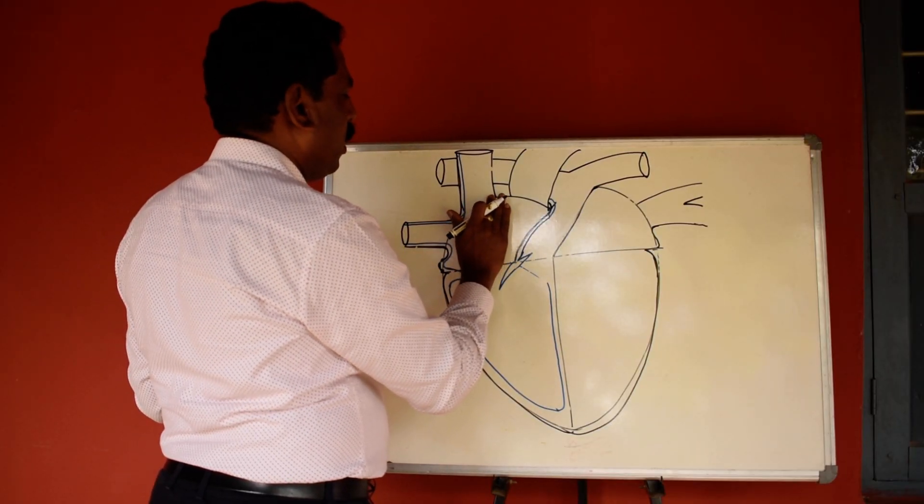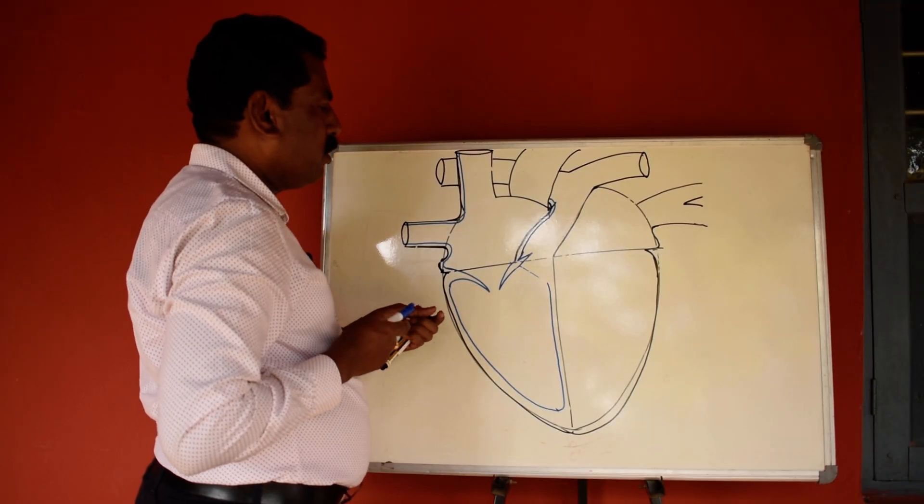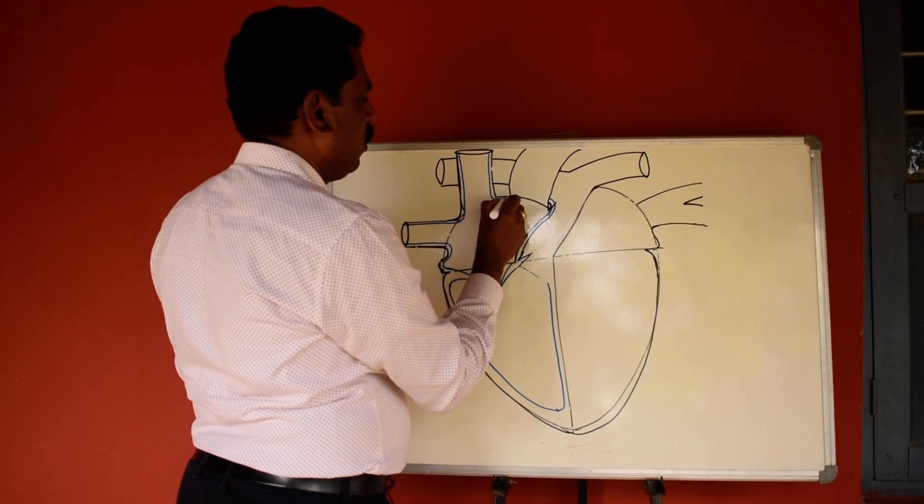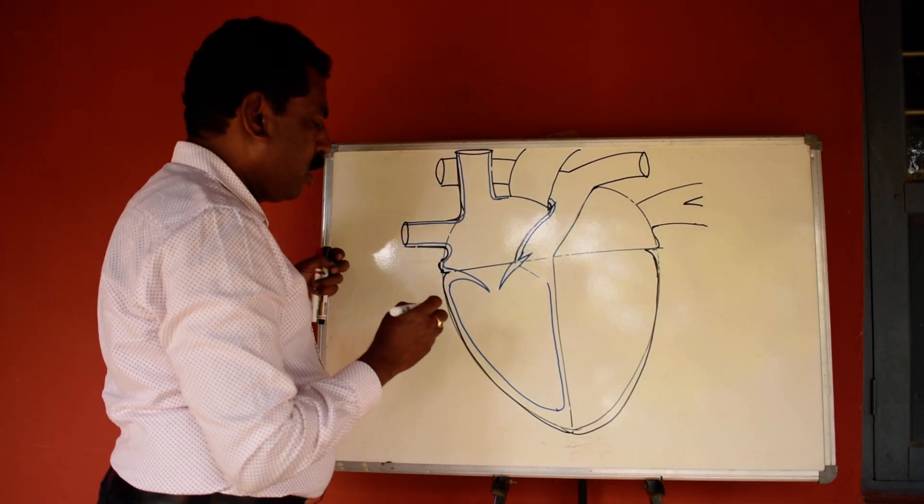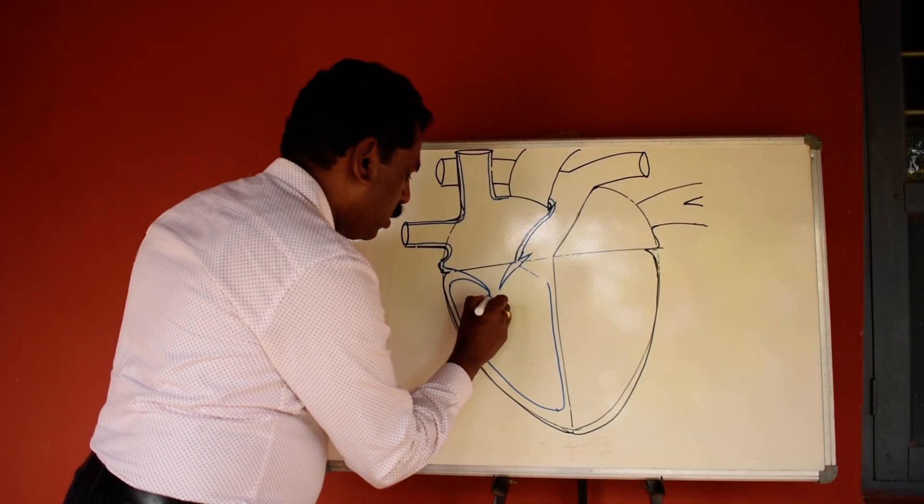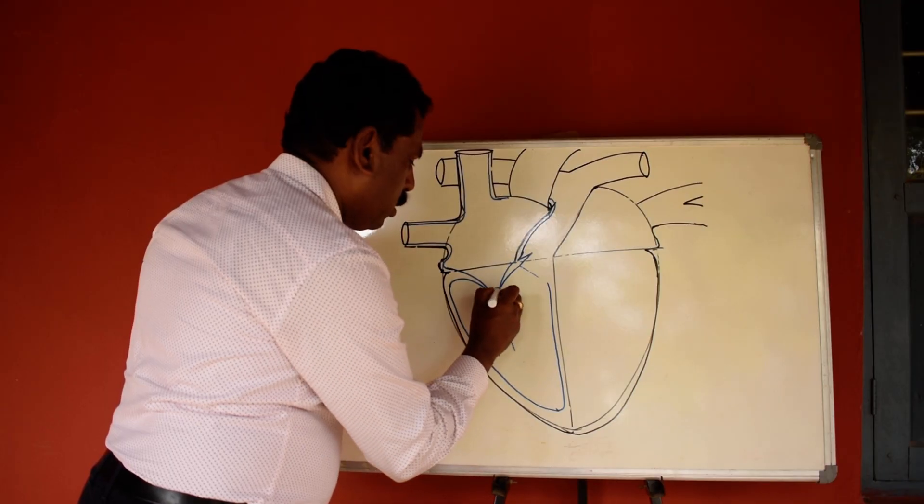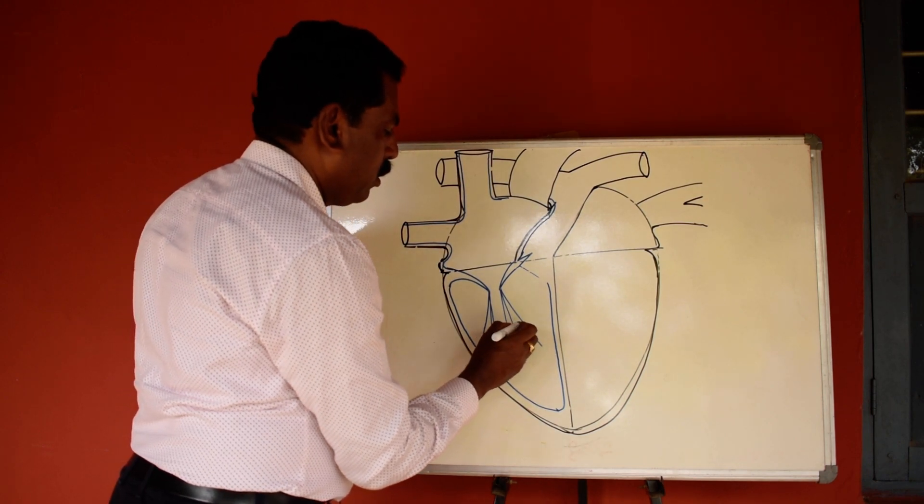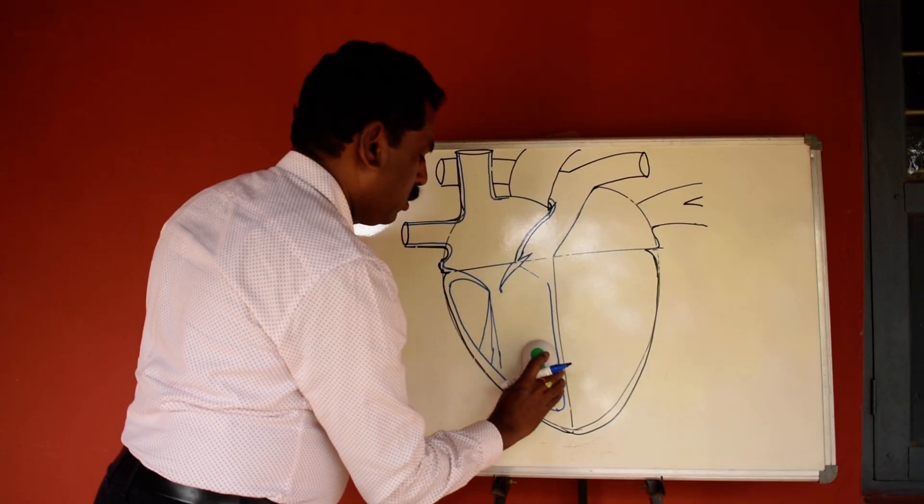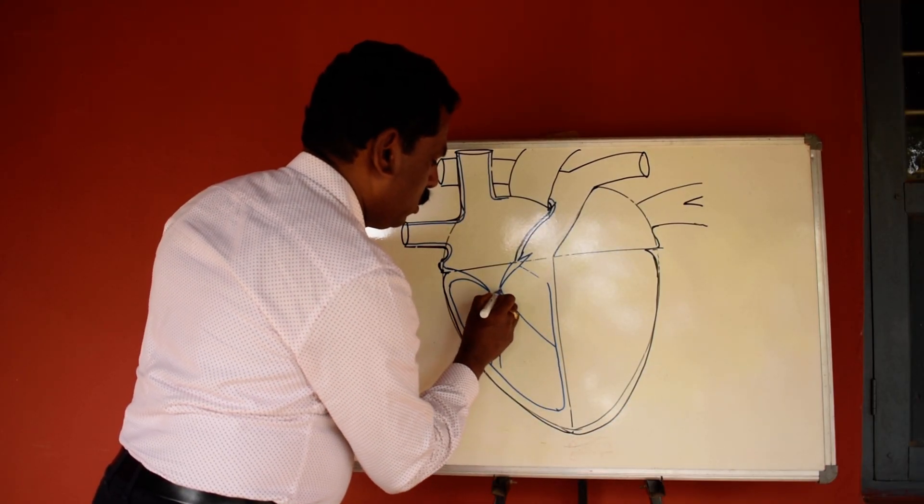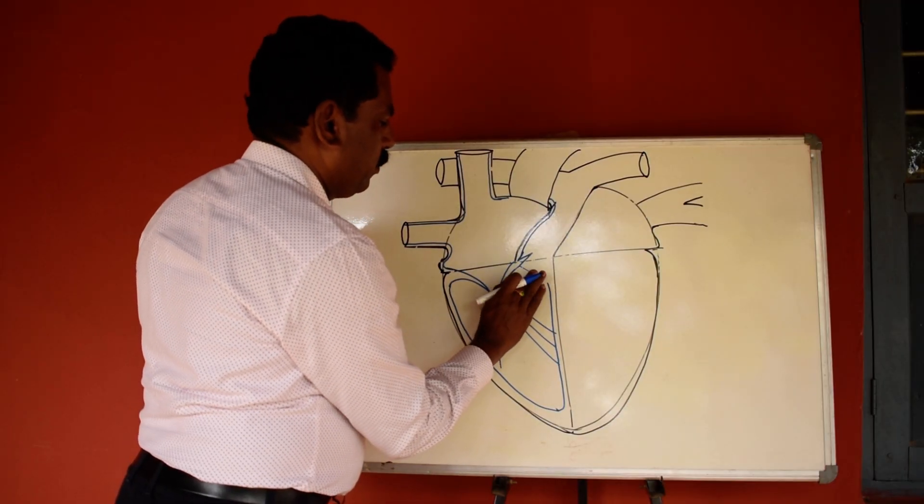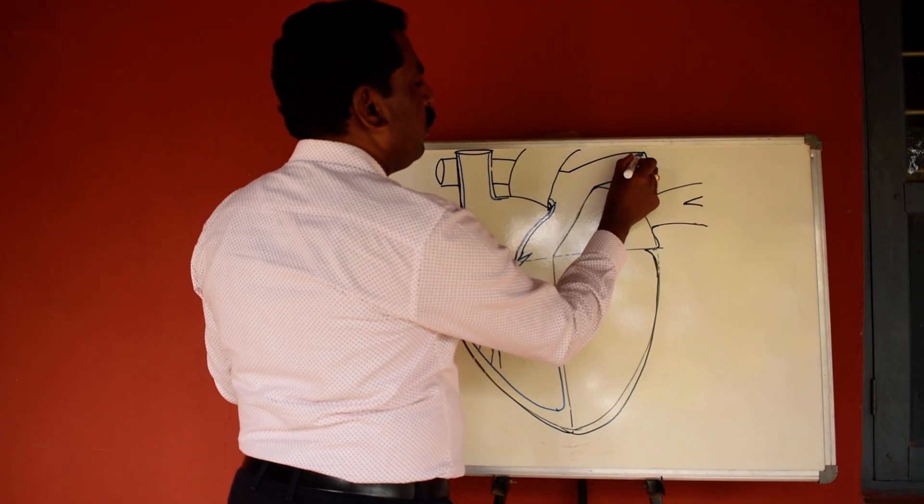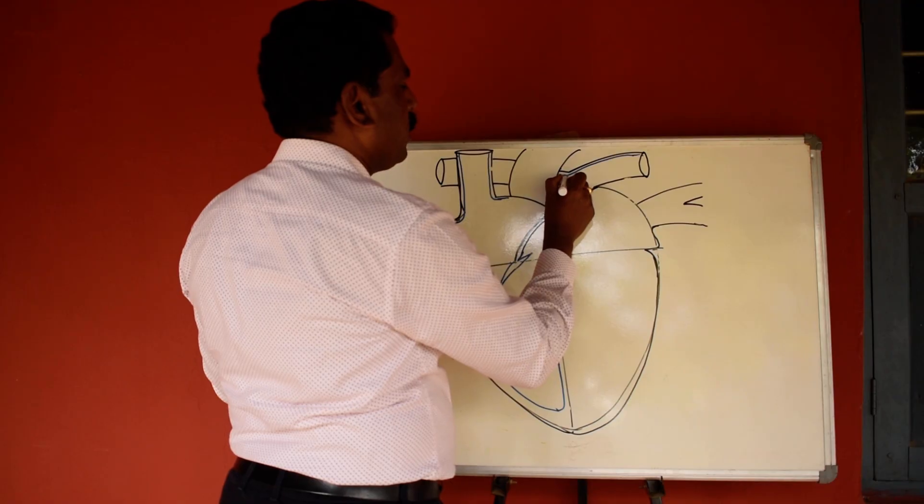Here also I will draw the guideline and continue with the blue marker to here. So now tricuspid valves come to here, like this. And I will continue this as a double line.